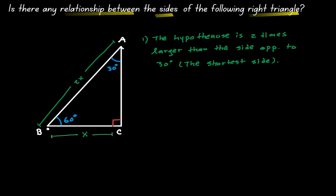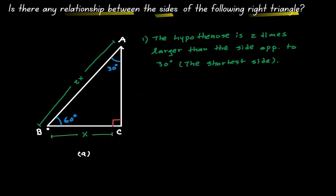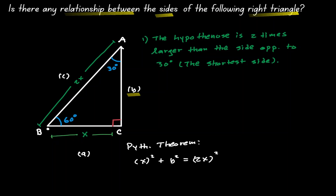With this new information, notice that now we can write down a relationship for the line segment AC. Don't forget that we have a right triangle, and because of that we can apply the Pythagorean theorem. So let's let our A be x, let's let our B be the unknown, and let's let C be the hypotenuse. Then I will have x squared plus B squared equals 2x squared. And 2x squared you can think about as 2 to the second times x to the second, which is 4x squared.